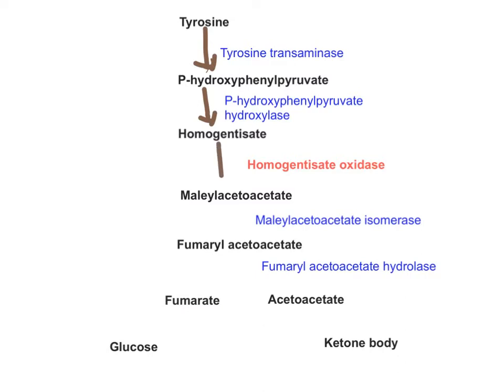Homogentisate is then converted to maleylacetoacetate, which is converted to fumarylacetoacetate by maleylacetoacetate isomerase enzyme. Fumarylacetoacetate is then broken down into fumarate and acetoacetate by fumarylacetoacetate hydrolase enzyme. Fumarate is a glucogenic substrate and acetoacetate is a ketone body, which is why tyrosine is considered both glucogenic and ketogenic.